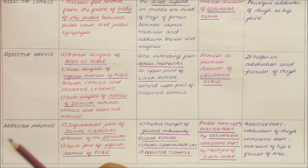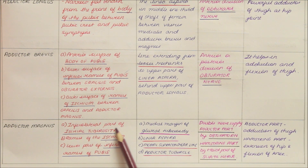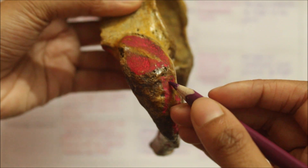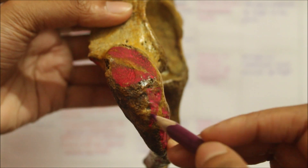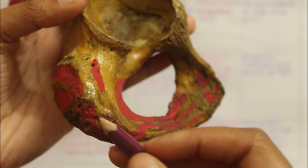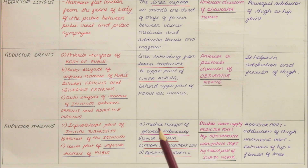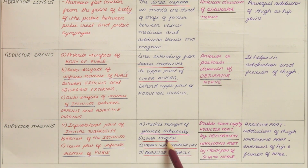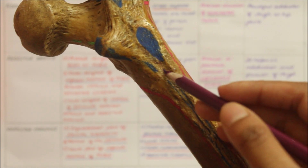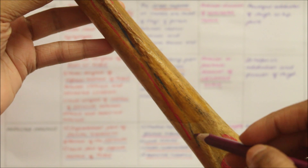Moving on to the adductor magnus. It originates from the infralateral part of the ischial tuberosity, the ramus of the ischium, and the lower part of the inferior ramus of the pubis. The adductor magnus inserts into the medial margin of the gluteal tuberosity, the linea aspera all along its length, the medial supracondylar line, and the adductor tubercle.